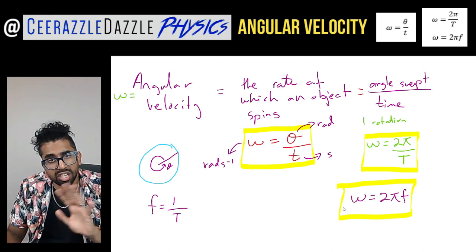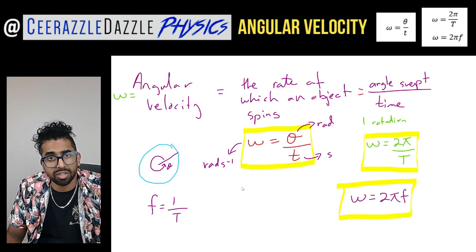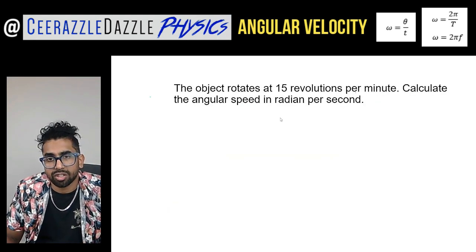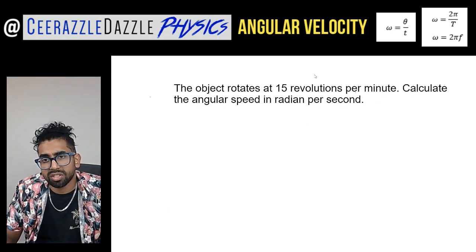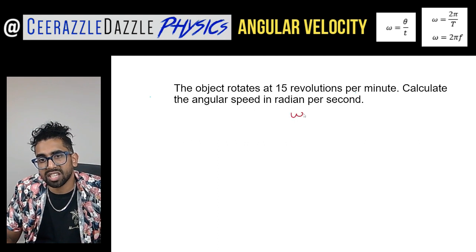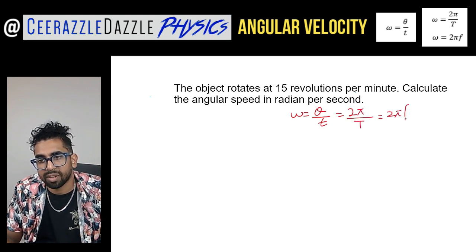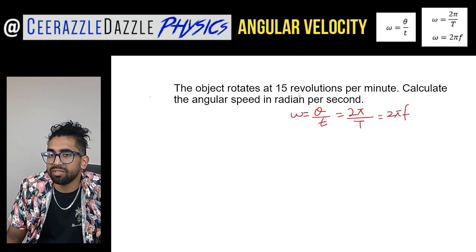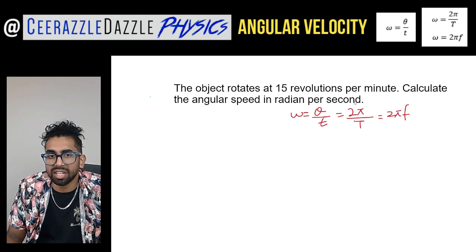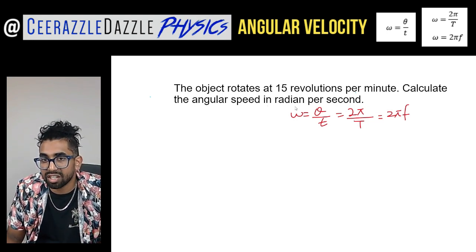Let's do a couple of questions to see how we use different equations at different times. First, let's put down all the formulas: omega equals theta over t, which also equals 2π divided by the time period, and also equals 2πf. First question: an object rotates at 15 revolutions per minute — calculate the angular speed in radians per second.